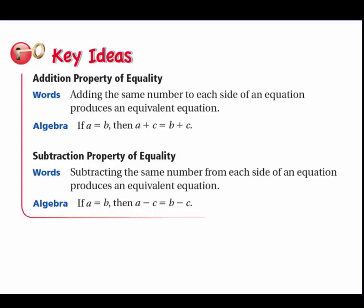Key idea: We're going to use the addition property of equality and the subtraction property of equality. The addition property of equality says that adding the same number to each side of an equation produces an equivalent equation.